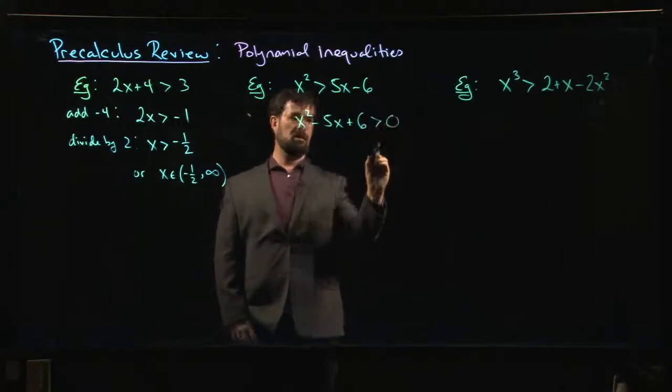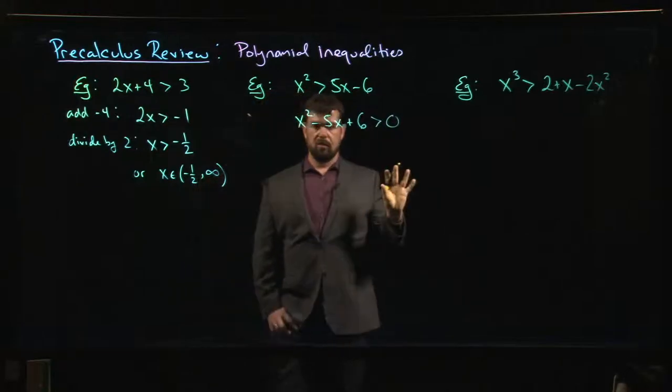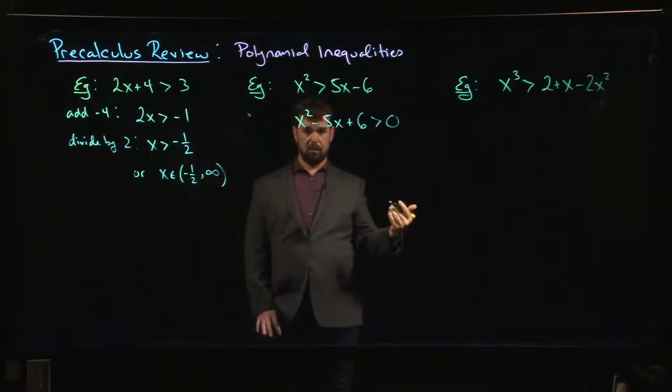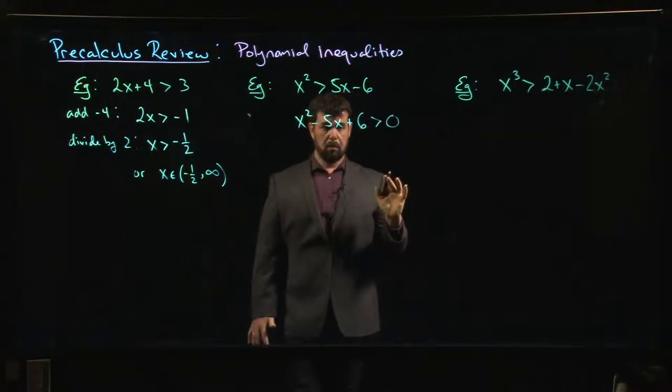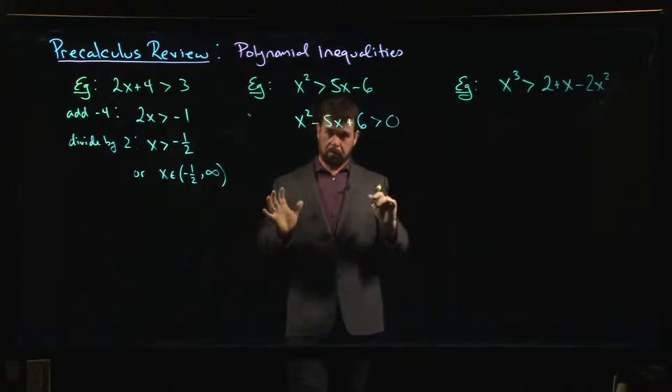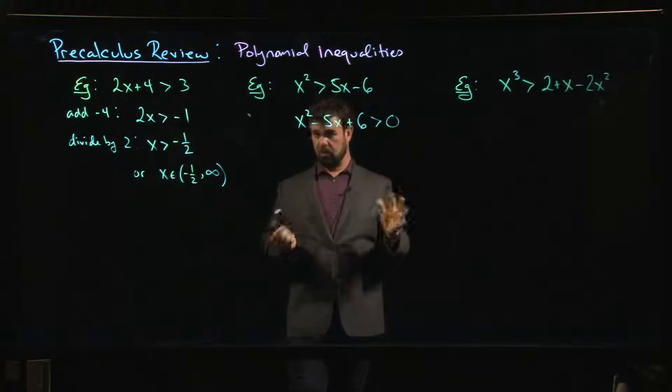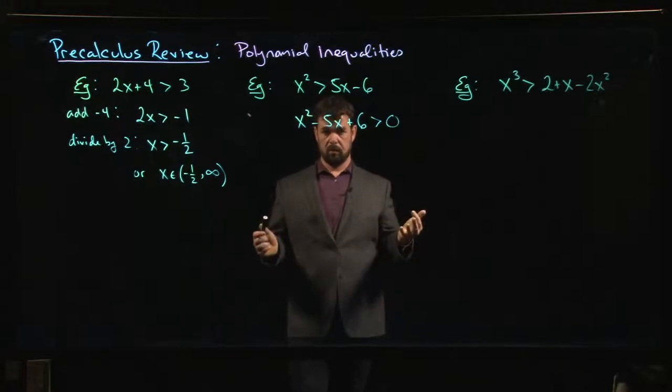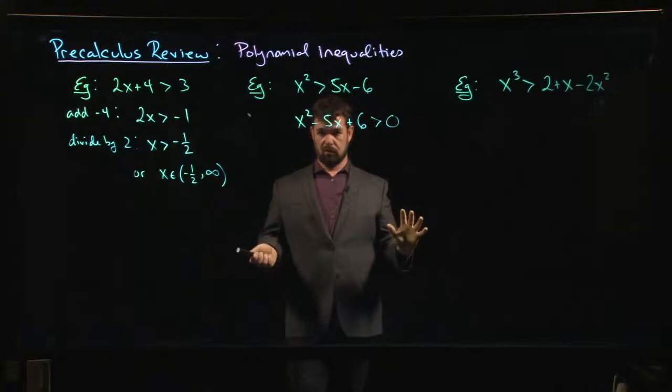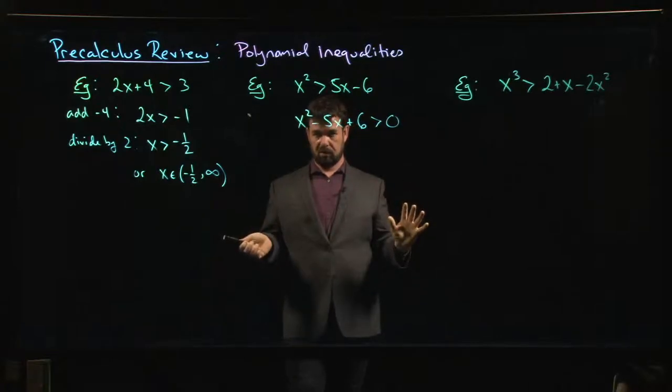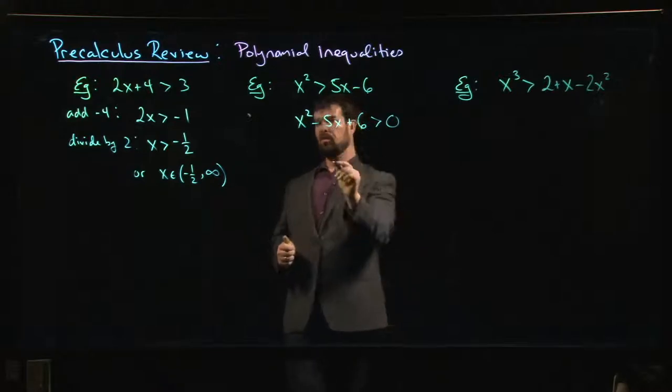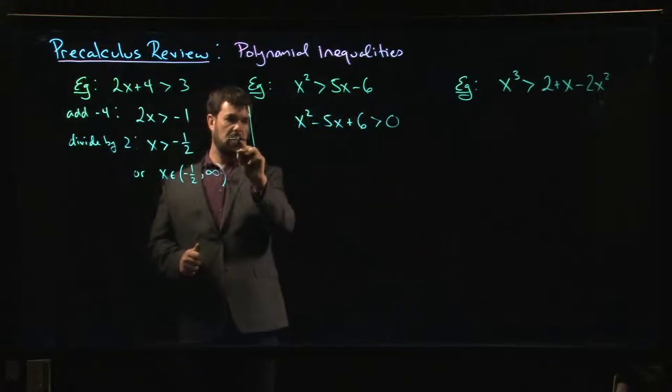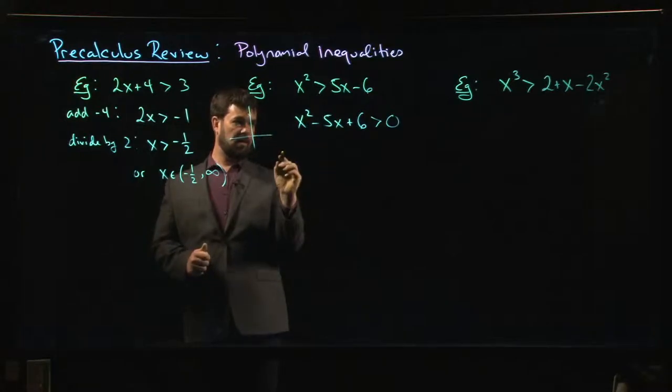This is useful because now this boils down to deciding where is the polynomial positive and where is the polynomial negative. We know how to solve that problem because we know that the only possible places where a polynomial can change from positive to negative are at the roots. So once we find the roots, we know where the possible sign changes are, and then we just have to determine signs on either side of the root.